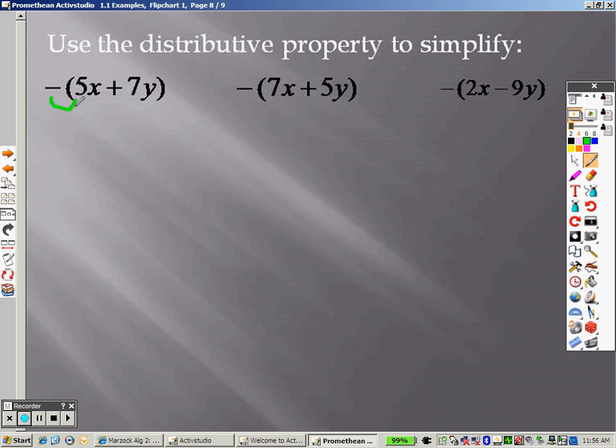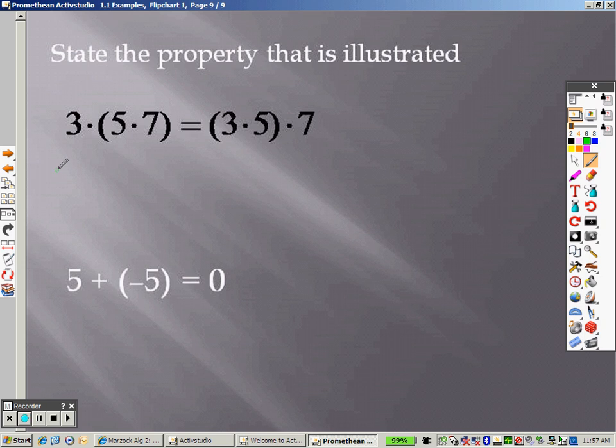Using the distributive property, this just means take the negative through, so you get negative 5x and negative 7y. Take the negative through here, you get negative 7x and negative 5y. Take the negative through here, you get negative 2x and positive 9y. It's like switching the sign. And what property do we have going on here? Now it's just multiplication. This is regrouping, so that is the commutative property as well. And this, once again, since they are opposites, it's the inverse property.